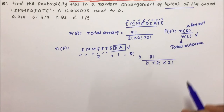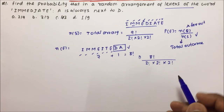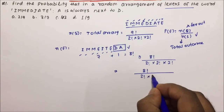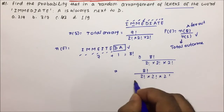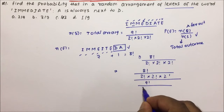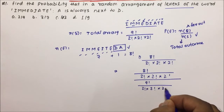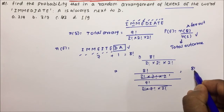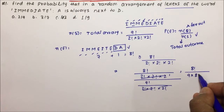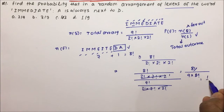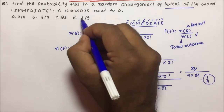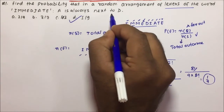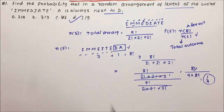Now, the probability = NE / NS = [8! / (2! · 2! · 2!)] / [9! / (2! · 2! · 2!)]. The 2! · 2! · 2! terms cancel. Then 8! / 9! = 8! / (9 · 8!) = 1/9. So 1/9 is the probability when you choose a random arrangement of letters in which A is always next to D in the word IMMEDIATE.